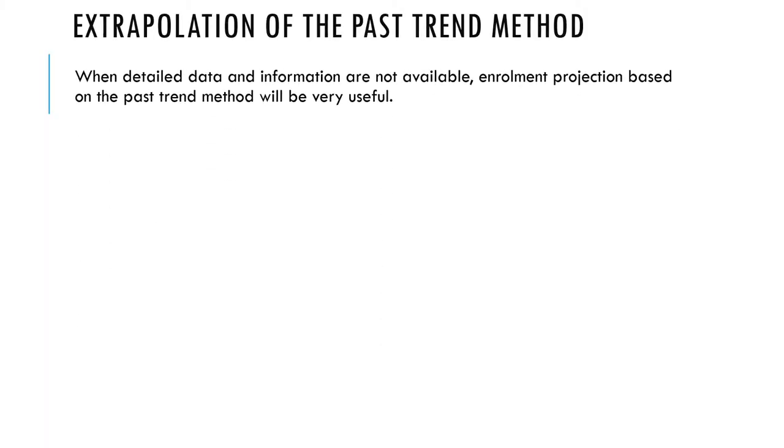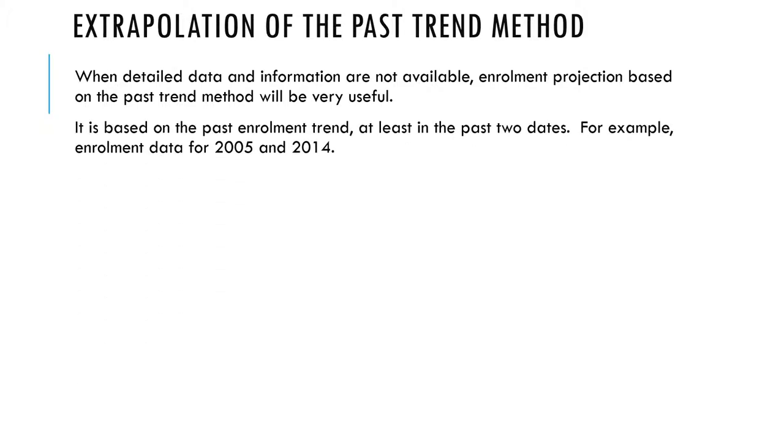So let's see how this goes. When detailed data and information are not available, enrollment projection based on the past trend method will be very useful. Now, this is based on two dates. For example, you may have 2005 and 2014.